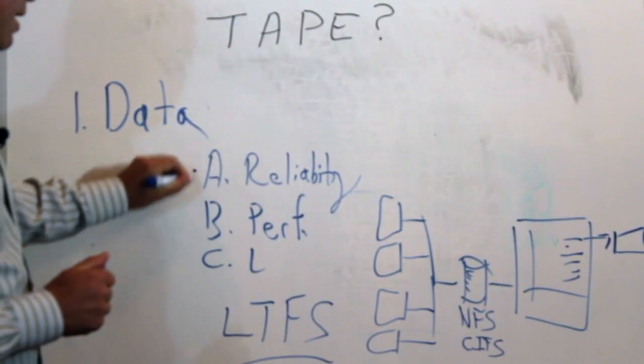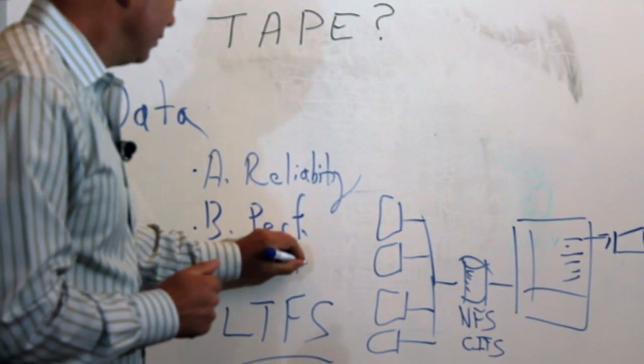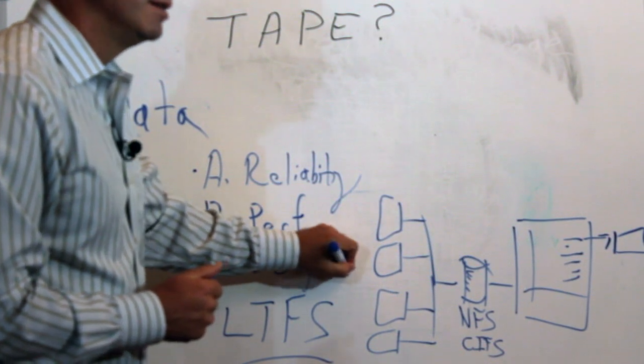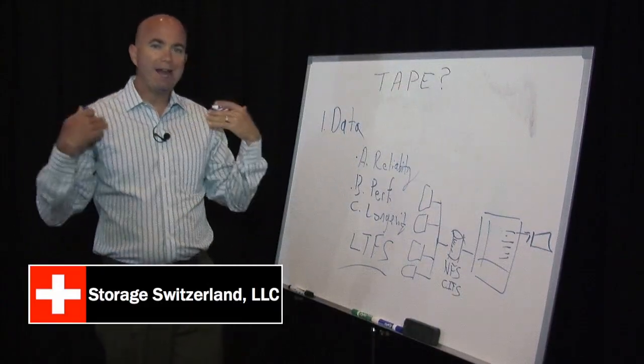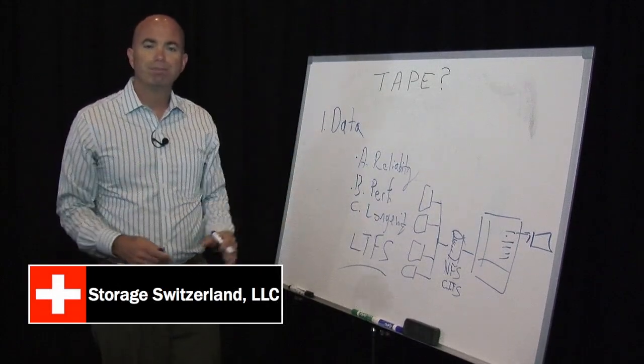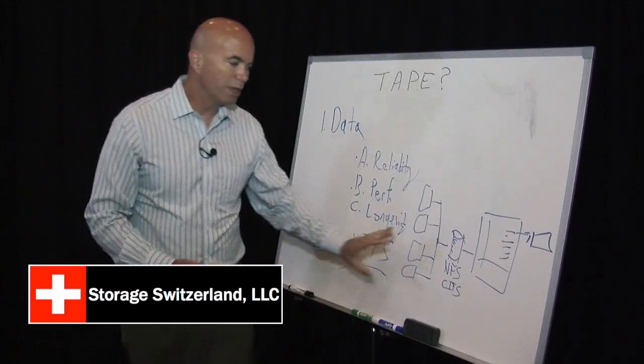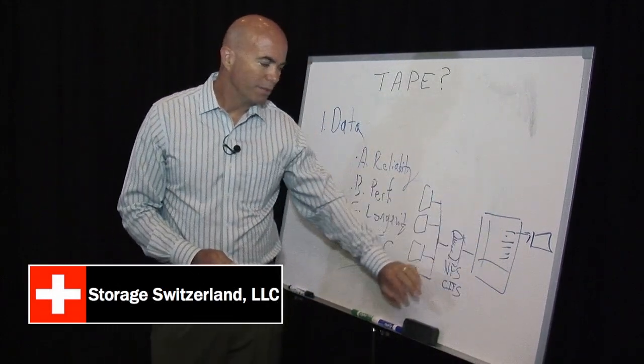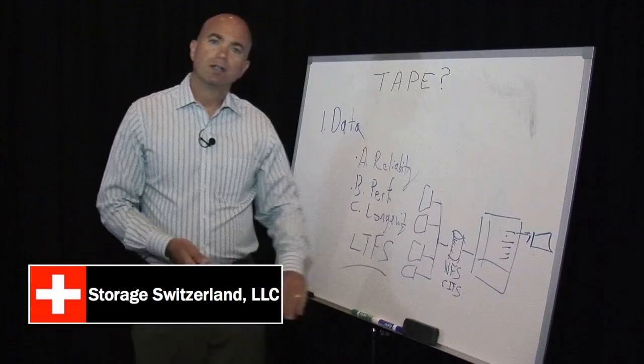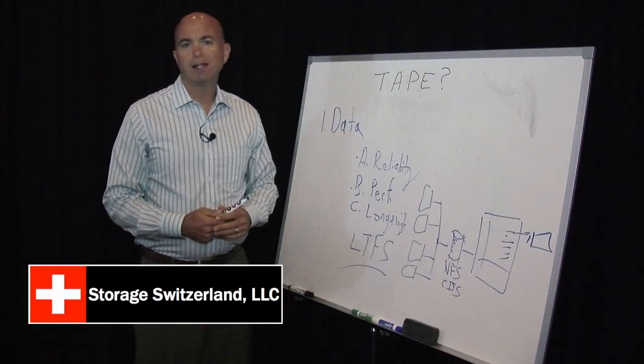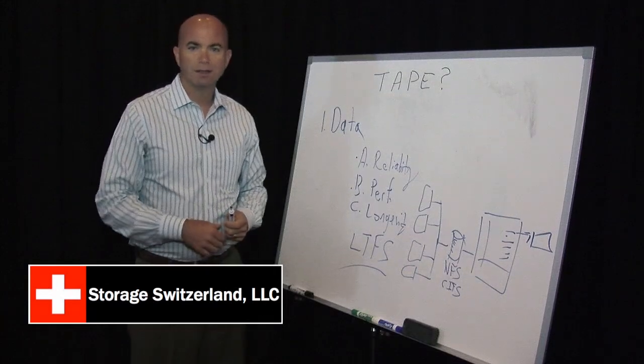So for these reasons - reliability, performance, and longevity - tape is really becoming something that people are looking for and it's moving out of the sort of place of last resort and really getting actively involved in the environment and being used as part of the primary file system. So again, I'm George Crump, lead analyst with Storage Switzerland. Thank you for tuning in today.